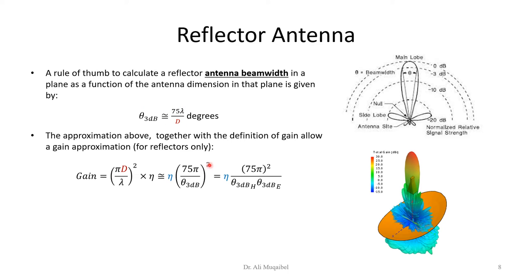We can also include the gain in the equation. Because we know this is the equation for the gain, we can solve for D and substitute for theta here. Solving for D it becomes 75λ over θ. If you have two dimensions we can have horizontal in the E-plane or H-plane. This becomes our final equation that relates gain to the beam width.